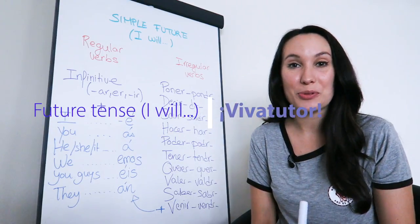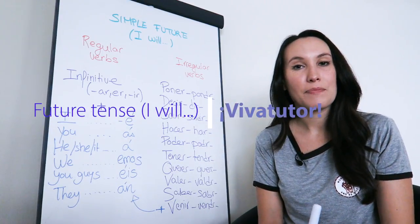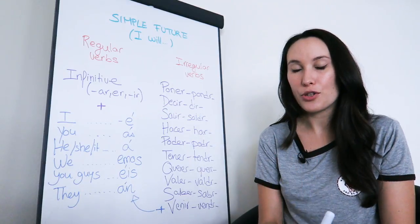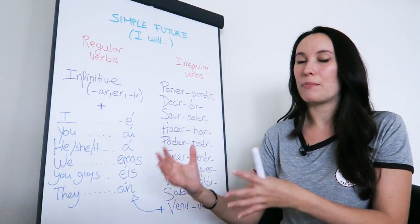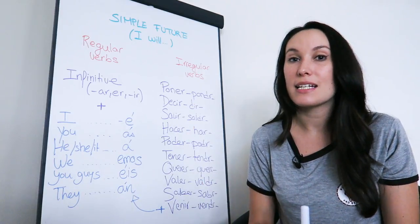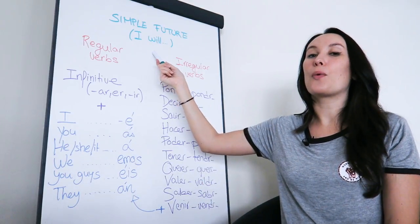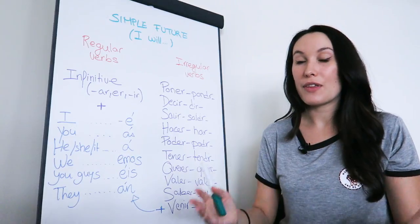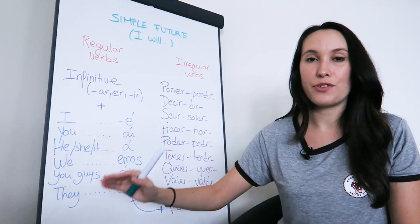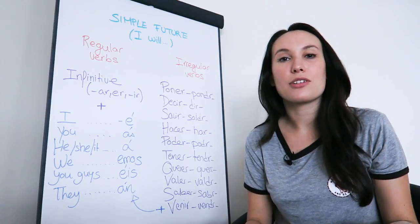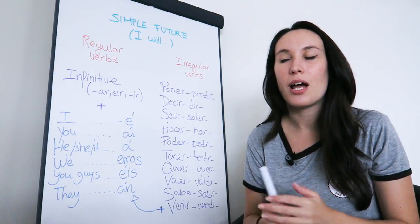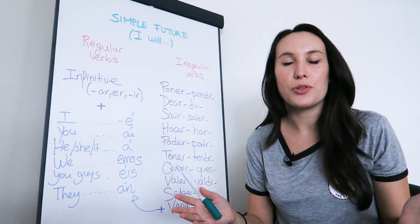Hola, welcome to VivaTutor. We're going to do future today. We already did near future, which was I'm going to and was for things that will happen quite soon. In this case, it will be I will do something, for the things that will happen quite in the distant future, not soon. For example, I will finish painting this room or I will go to Europe when I finish college.